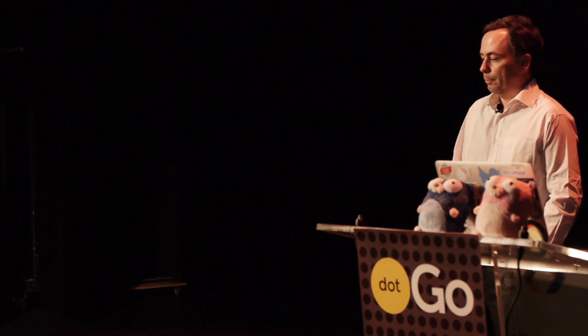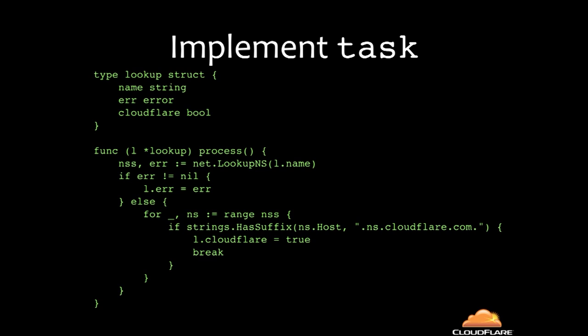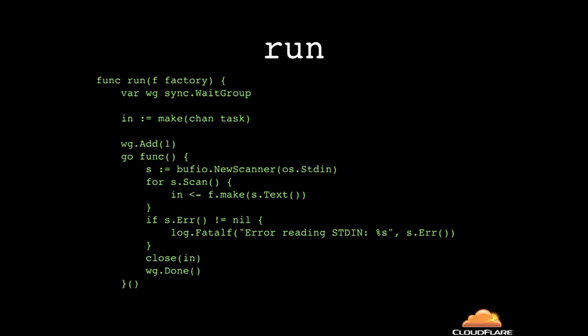I made a simple LookupFactory for the original program — all it does is create a lookup struct from a line; just the one line from the original code. Then I implemented the Task interface on the lookup type: I took the part about processing the NS lookup and put it in a function called 'process', and took the printing part and put it in 'print'. So now lookup implements the Task interface.